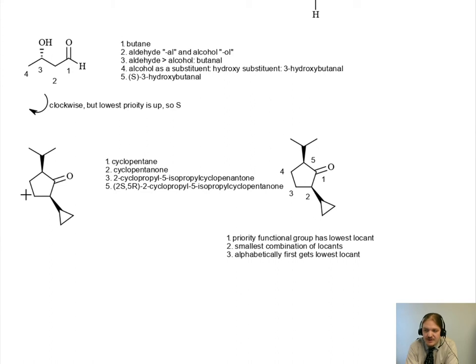There we go. Two S, five R, two cyclopropyl, five isopropyl cyclopentanone. Again, complex structures, but you can name these things if you can follow the rules and follow the process. All right. Thank you for watching.